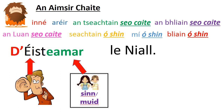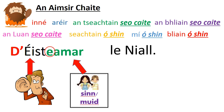Now: D'éisteamar le Niall — we listened to Niall. Look at this — caol. And look at this — caol. Caol le caol — tá seo ceart go leor.